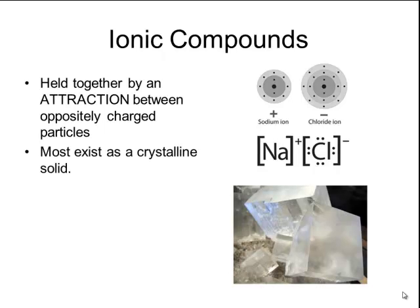Most ionic compounds exist as crystalline solids, and there are lots of different shapes of these crystals. The shape of each crystal depends on what types of ions are combining together. Sodium chloride, for example, has a cubic shape.